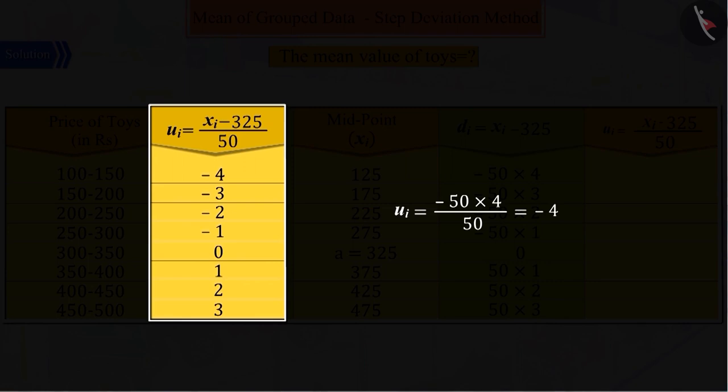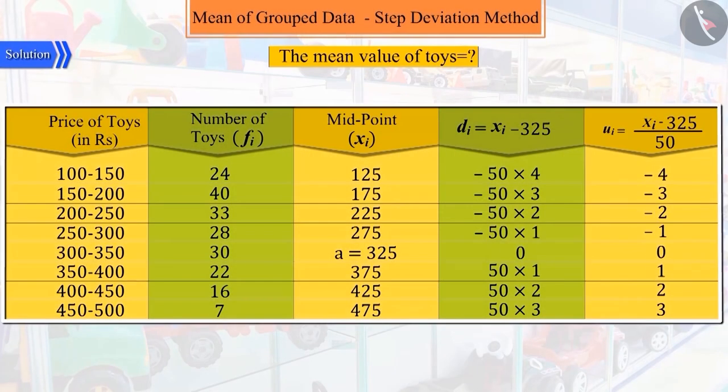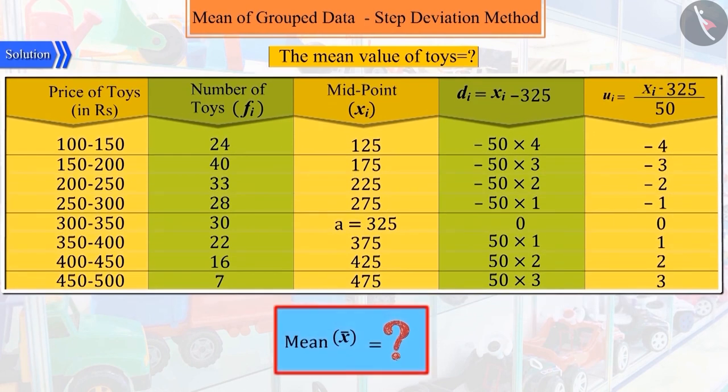From which we calculate all the UI and construct a table. Since we have to find the mean, can you tell what we will have to do to proceed?